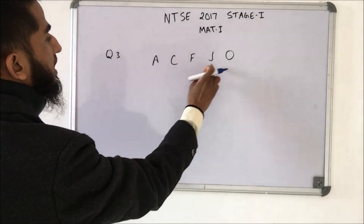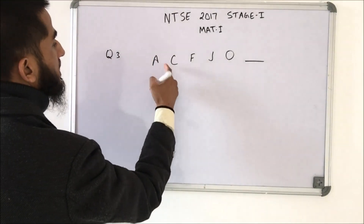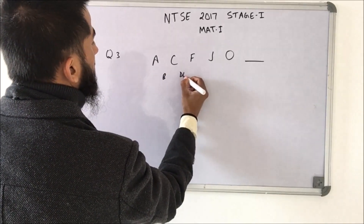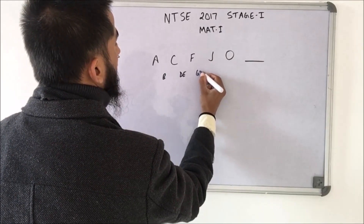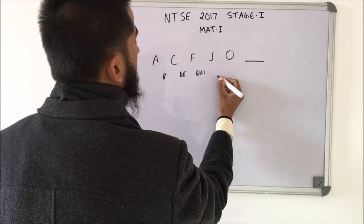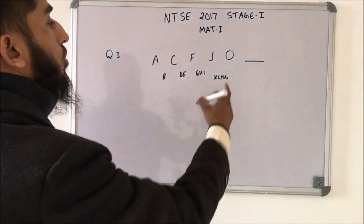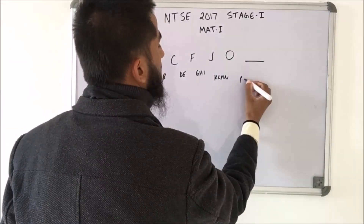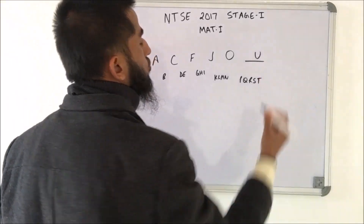Again we have a series: A, C, F, J, O and we need to find out the next term. There is one missing term B between A and C. Then two missing terms D, E before F. Then three missing terms G, H, I before J. Then four missing terms K, L, M, N before O. So we should have five missing terms: P, Q, R, S, T, and then we should have U.